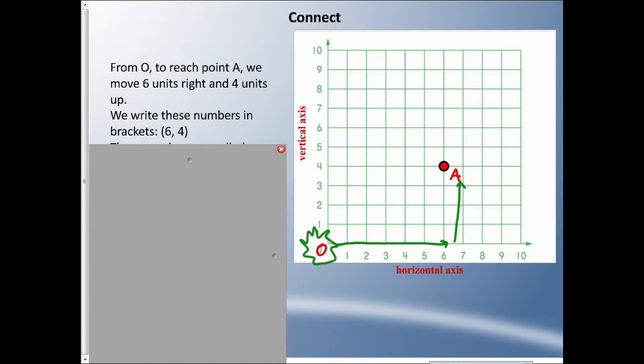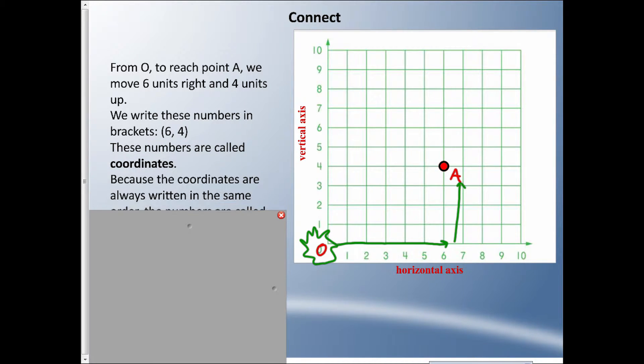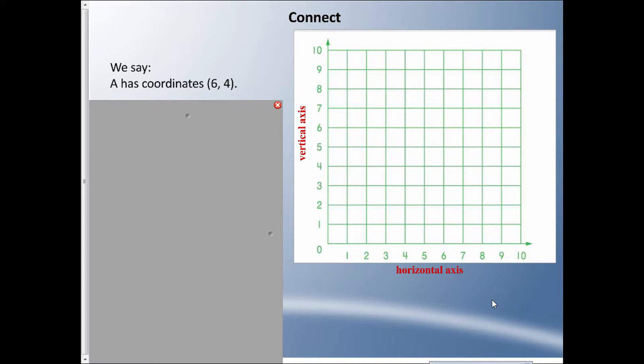Point A is six comma four, and we call these coordinates. Because we're always looking at the X axis or the horizontal axis first, we always put that first, and we always put the Y axis or the vertical axis second. We call them ordered pairs because I know the first number in the pair is going to be the horizontal axis, and the second number always represents the vertical. We say A has coordinates (6,4).